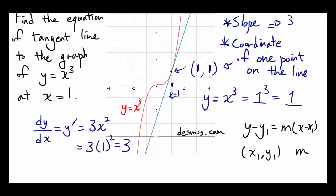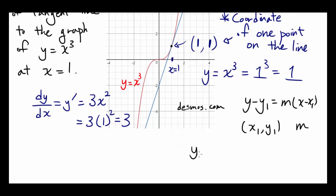So in our case, 1, 1 is on our line. So it's going to be y minus 1 equals the slope, which is 3, times x minus 1, and that's going to be our answer.